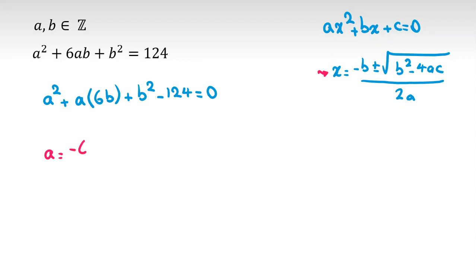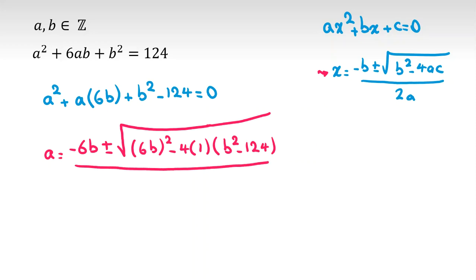So a equals negative 6b plus minus square root of 6b squared minus 4 times 1 times b squared minus 124, all over 2. Now if I want to simplify, it will be negative 6b plus minus - if we calculate, I have 36b squared here, I have negative 4b squared, 36 minus 4 is 32b squared.